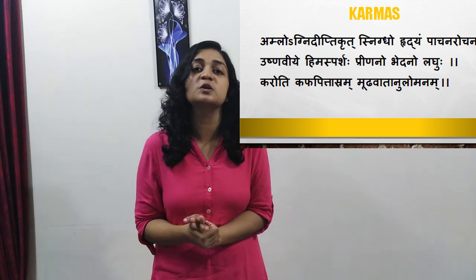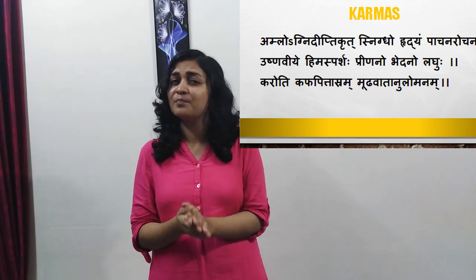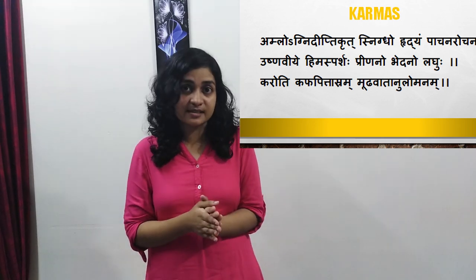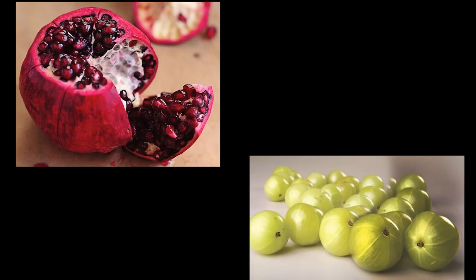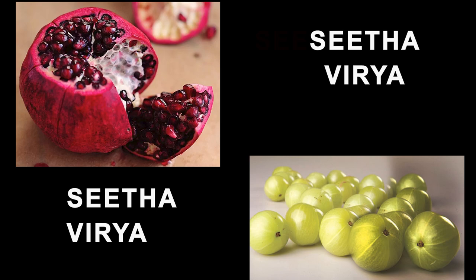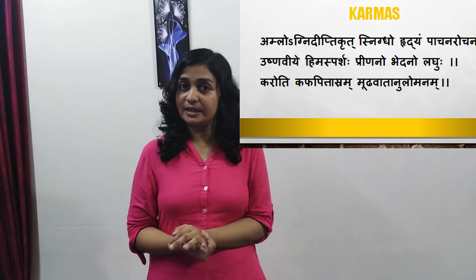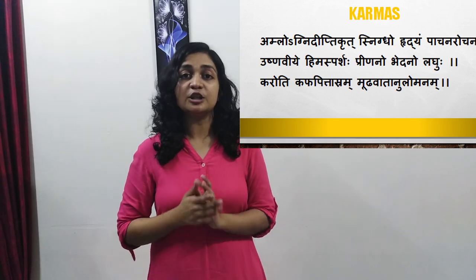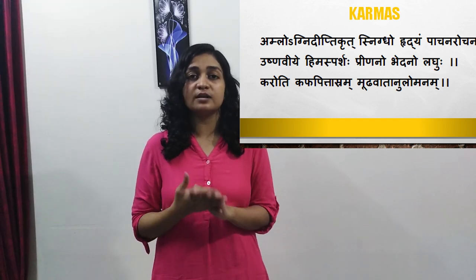The Ushna Virya also gives Amla Rasa its Srava or secretory Guna. This secretion includes the secretion in your mouth in the form of saliva when you eat something very sour or even think about it. When we have wounds or skin conditions which are oozing, we are advised to avoid Amla Rasa to prevent further secretion or Srava. Note that Dadima and Amalaki are Sheeta in Veerya and are exceptions. Properties like Deepana, Pachana, Ushna Virya, etc. are due to the Agni Mahabhuta predominance in Amla Rasa.